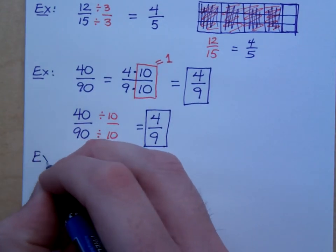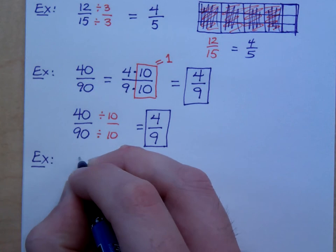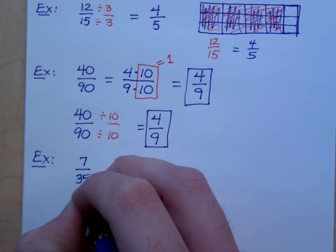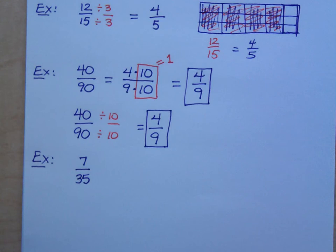What if I have the example 7 over 35? Is this fraction in lowest terms? And if you say it's not in lowest terms, then that means you're saying that there is a factor that goes into both 7 and 35. So, Dennis, you say 7 goes into both of those, right?